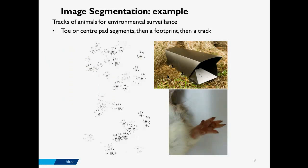Here is an example of image segmentation. We are interested in tracking images for environmental surveillance. We place pieces of paper, and when an animal with a particular toe leaves marks on them, if we are able to segment these regions, we should be able to identify or define the footprint. Then, following different steps, we should be able to define the track. This is an example where segmentation is an initial step enabling further higher-level processing.